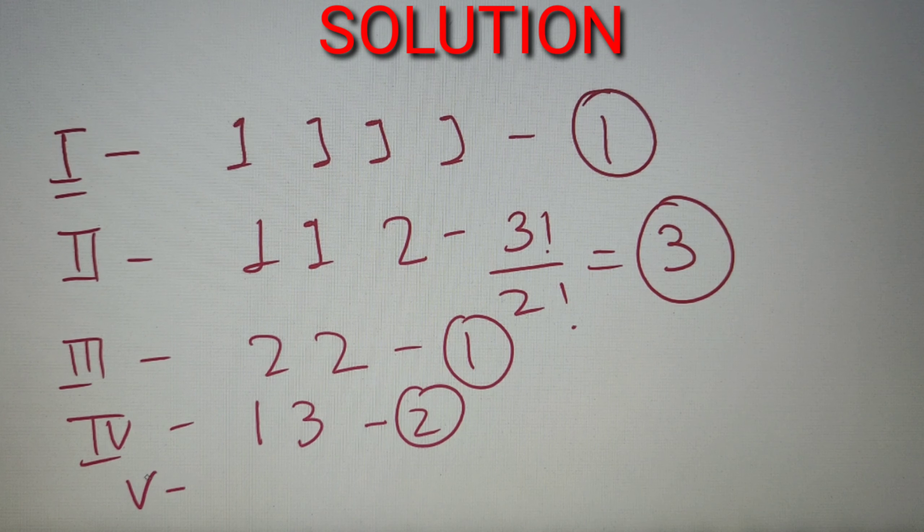And moving on to our last case, let us consider that the person has taken all four steps altogether. So for this, there can only be one possible case, so our answer will be one.